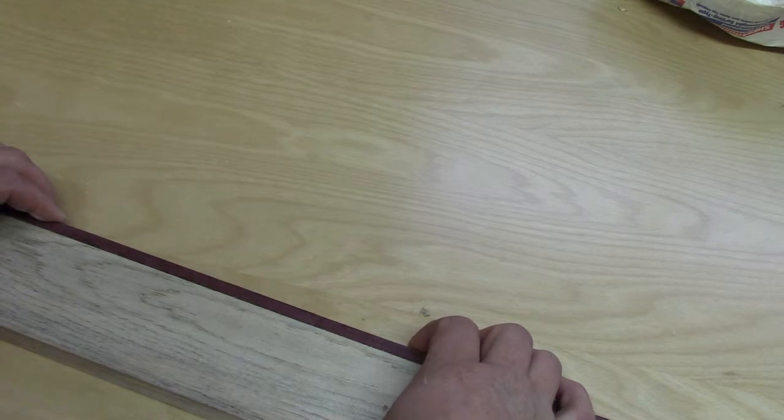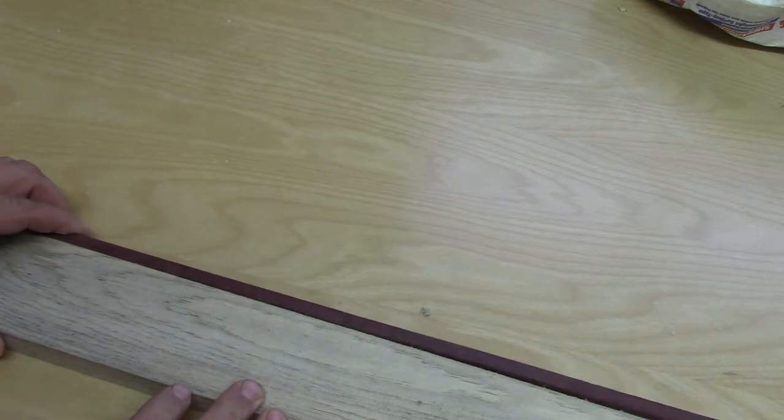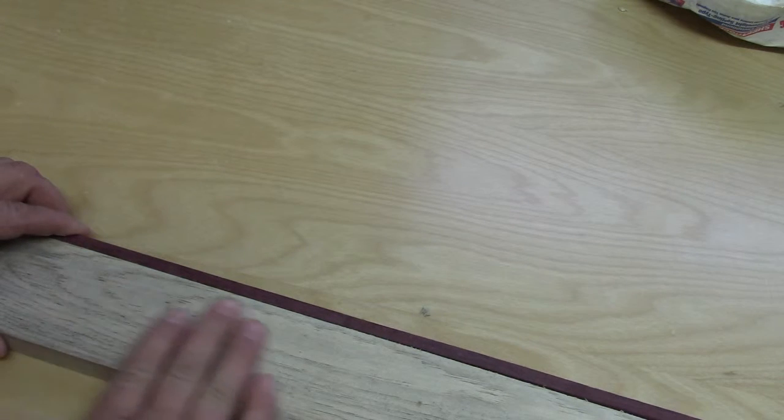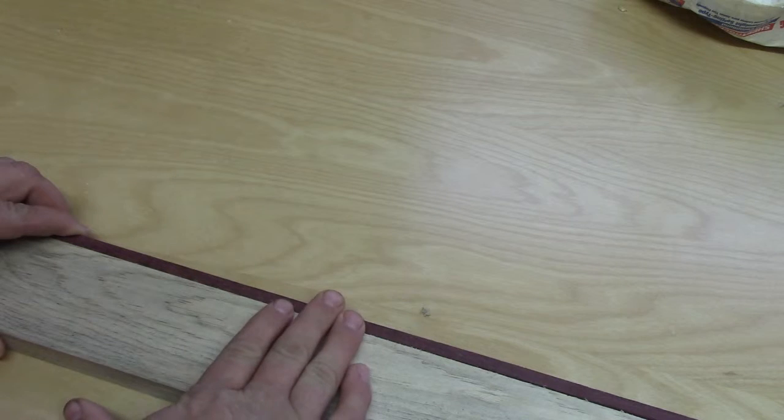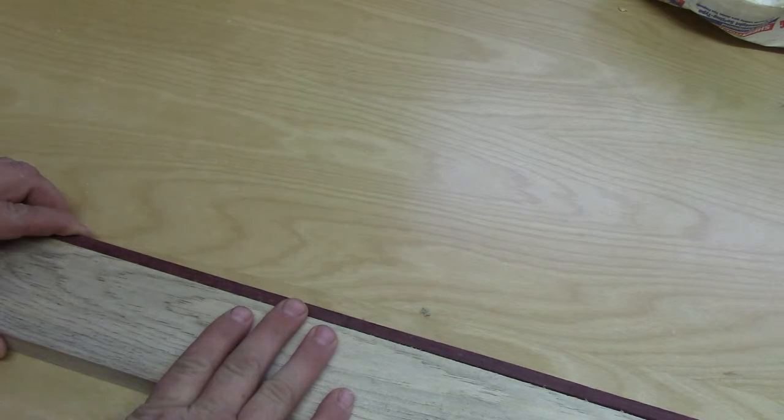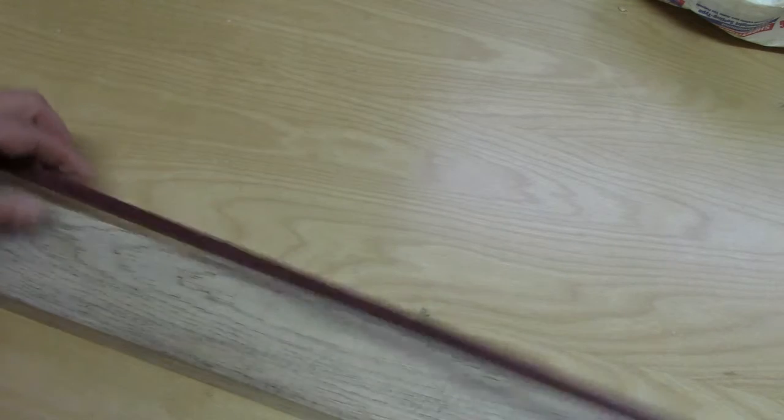But the problem with that is, if you've spent any amount of time sanding, you would know that if I sanded this pine board by itself and I sanded this purple heart by itself, I would have a very good result. But if this purple heart was attached to this pine, well when I went to go sand it, the pine would sand away at a much higher speed than the purple heart because it's harder, it's denser.